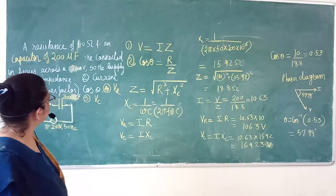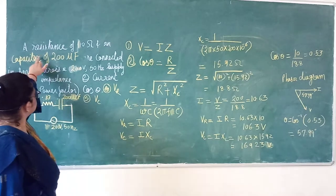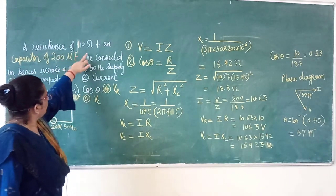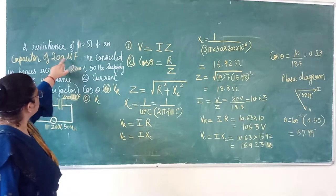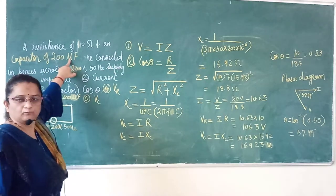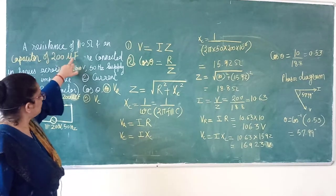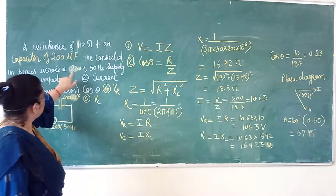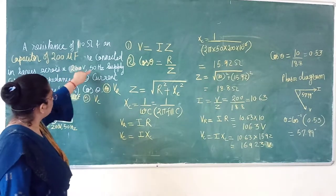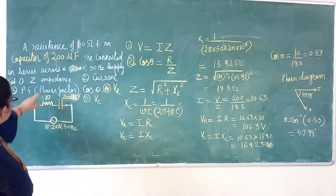Now the second numerical is regarding capacitor. A resistance of 10 ohms and a capacitor of 200 microfarad are connected in series across a 200 volt 50 hertz supply.